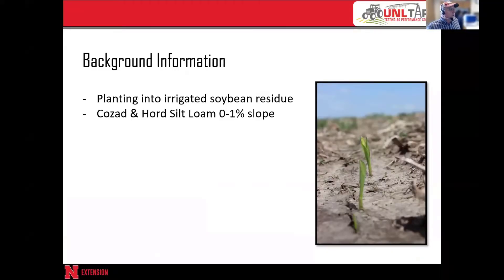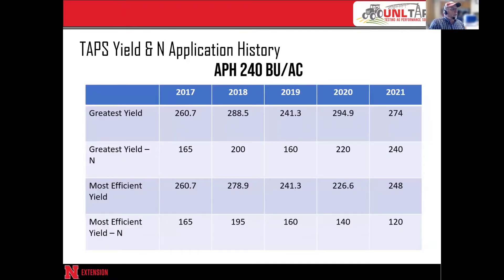The field we're planting into is a Cozad silt loam, also has a little bit of Horde silt loam in it, zero to one percent slope. We are planting into irrigated soybean residue; soybeans last year would have been in that 70 to maybe 75 bushel range. Our field has an APH of 240 bushels per acre, and you can see the yields from our TAPS competition — the high yields the past five years range from 241 in 2019 up to 295 in 2020.